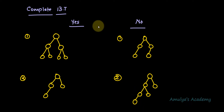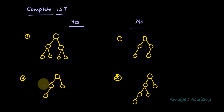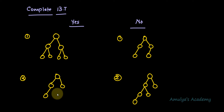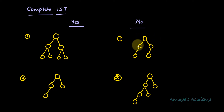Let me show you a few examples of a complete binary tree. This first one is a complete binary tree because it is completely filled at every level. This second one is also a complete binary tree because all levels except the last level are completely filled, and in the last level nodes are filled from left to right — at the leftmost side we have a node. Now this next example is not a complete binary tree because all levels except the last are completely filled, but in the last level nodes are not filled from left to right — there is an empty place.